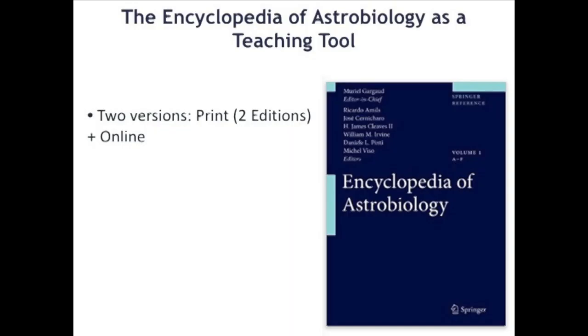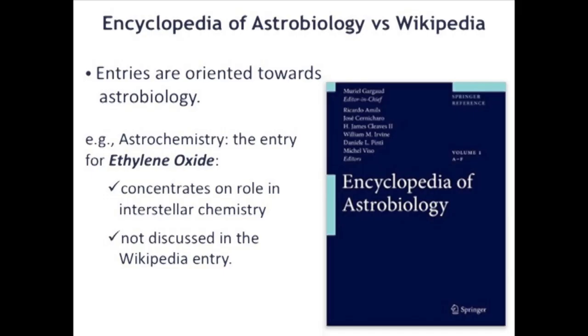At this point, there are two print versions of the encyclopedia. The second version, at least, is online. Why do we want an encyclopedia of astrobiology when we have Wikipedia? That's a question I'm often asked, and I think the basic point is that in the encyclopedia, the entries are oriented toward astrobiology. For example, in our section on astrochemistry, we have an entry on ethylene oxide, which concentrates on its role in interstellar chemistry — the sort of thing which is not discussed in Wikipedia.